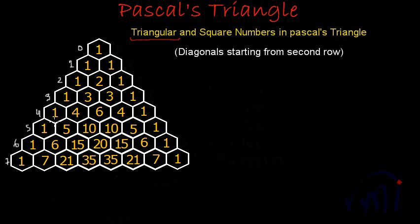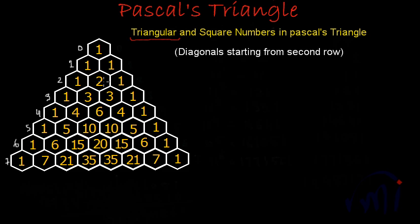These are the row numbers. If we talk about two diagonals which are starting from row number two, they will be this diagonal and this diagonal. These are the two diagonals starting from row number two, and the 2 which is the middle term of row number two actually belongs to the diagonal starting from row number one — the diagonal where we found a series of natural numbers.